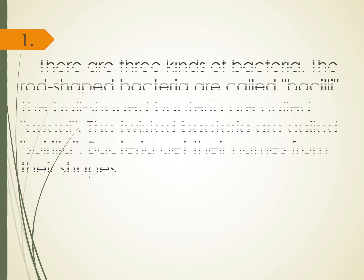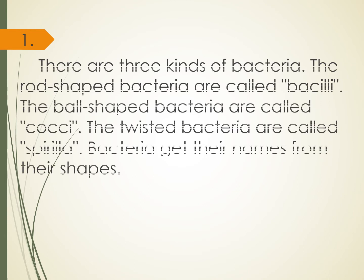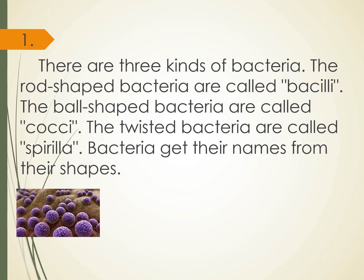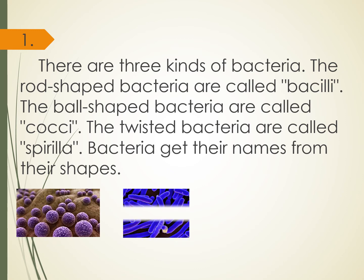Number 1: There are three kinds of bacteria. The rod-shaped bacteria are called bacilli. The ball-shaped bacteria are called cocci. The twisted bacteria are called spirilla. Bacteria get their names from their shapes.